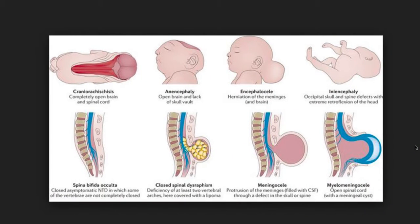Neural tube defects are developed within the first trimester of pregnancy. This is due to folic acid insufficiency — not having enough folic acid. This can lead to various stages of neural tube defects. It's not fully understood, but we know it's related to maternal dietary folic acid deficiency.